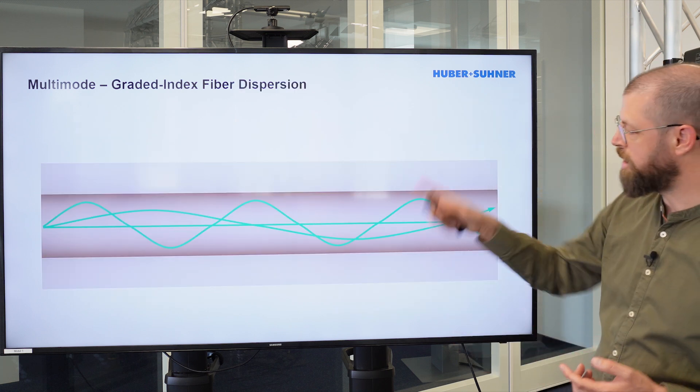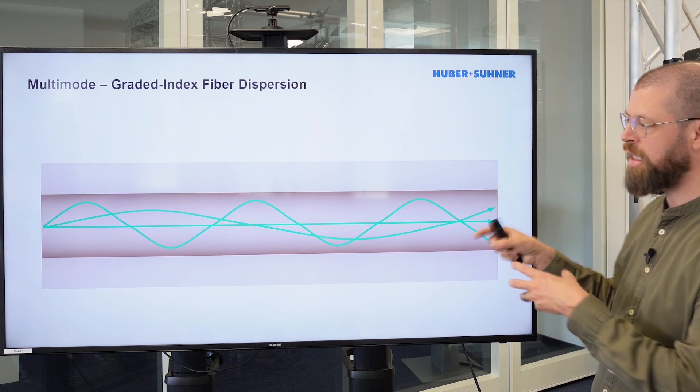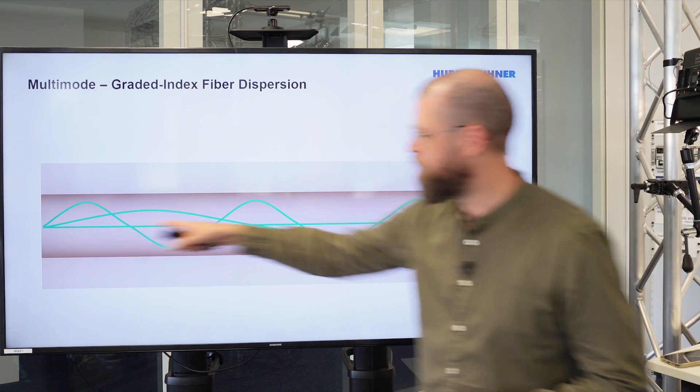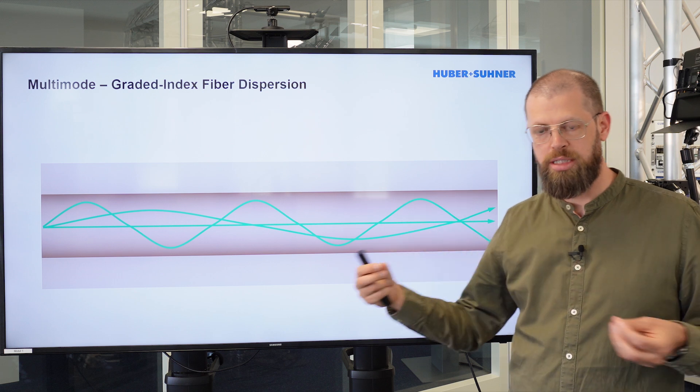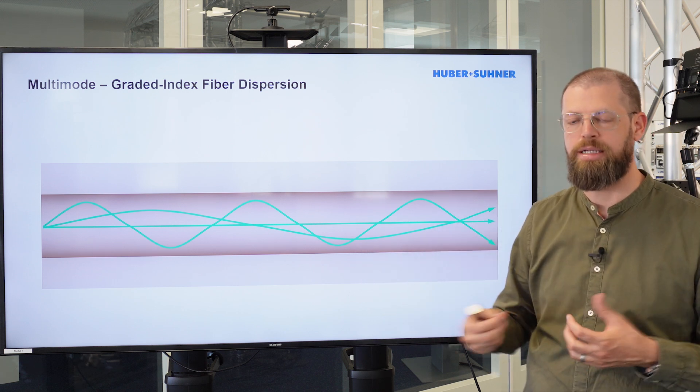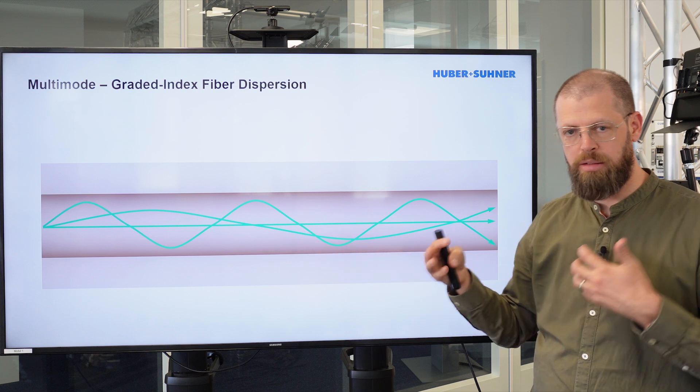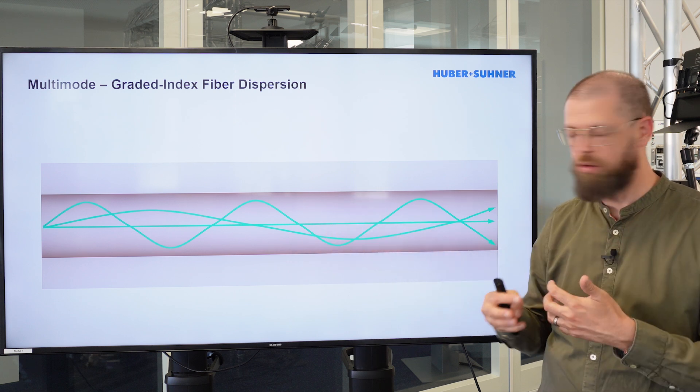Now let's have a look at this diagram again. What that means is that the modes that have got the shorter distance are actually traveling through the higher refractive index, meaning those light elements are slowed down.